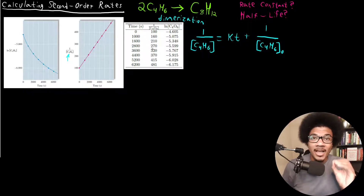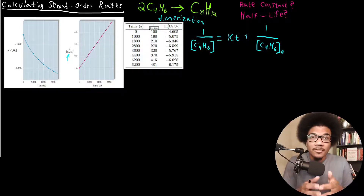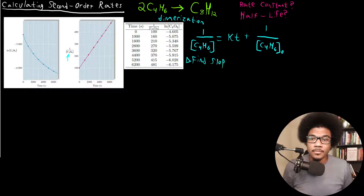For the rate constant, we know that we can calculate it by getting the slope of this line, because we have this linear relationship between the inverse of the concentration and time. So if we just calculate the slope, then we can get the rate constant K. We're going to find a slope to determine the rate constant.